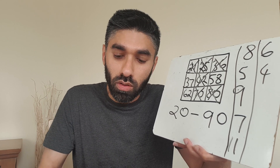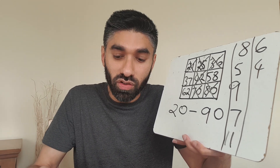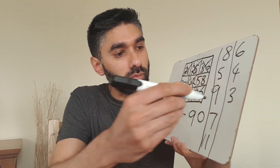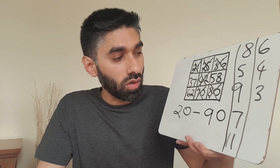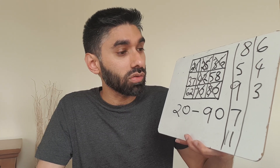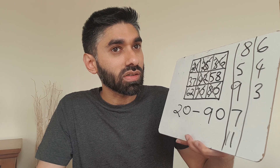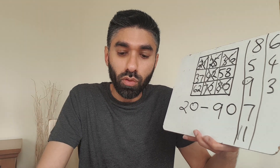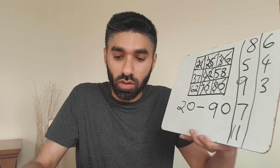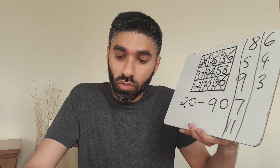Six and one - seven, already had the sevens. Two and one - three. Do we have a multiple of three? Three times 12 is 36 - already gone. Three times 19 is 57 - very close! Three times 20 is 60 - difficult. Five and four - nine, already had that. Five and three - eight, already had that. Three and three - six, already had that.